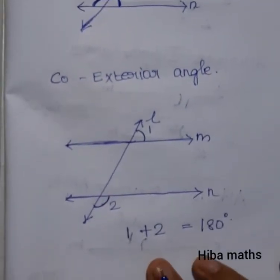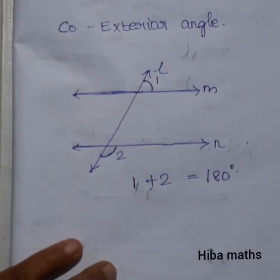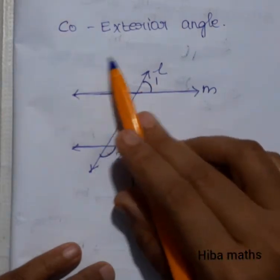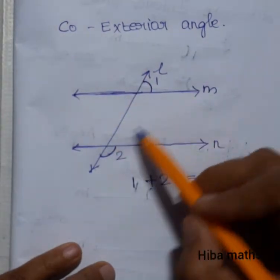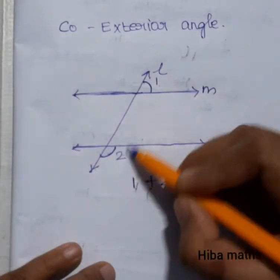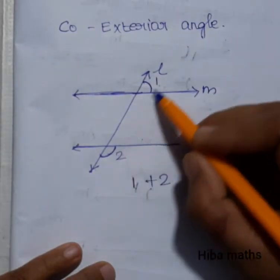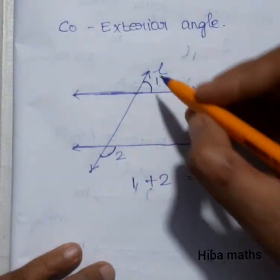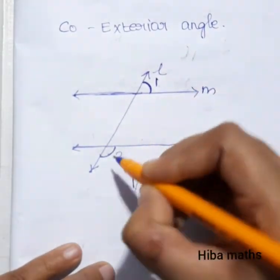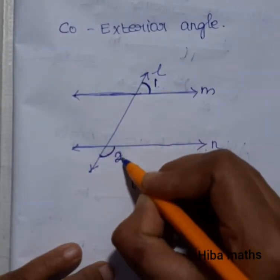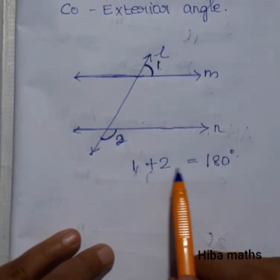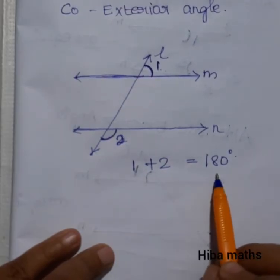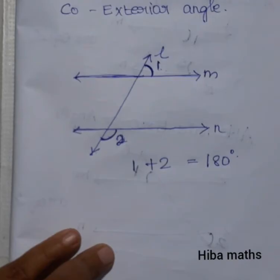Next is co-exterior angles. Exterior means outside the parallel lines. Co-exterior angles are the two angles on the outside of the parallel lines on the same side — for example, both on the right side. Co-exterior angle one plus angle two will be equal to 180 degrees.